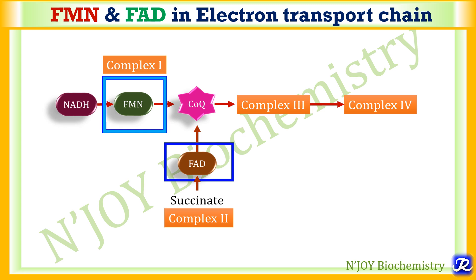FMN and FAD have a role in the electron transport chain. FMN is part of complex I, where it accepts two electrons and two hydrogen ions from NADH. FAD is part of complex II, where it accepts two electrons and two hydrogens from the substrate of the citric acid cycle, succinate. This is how they play a very important role in the electron transport chain.